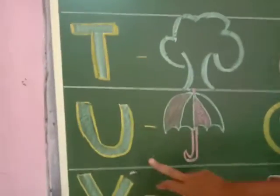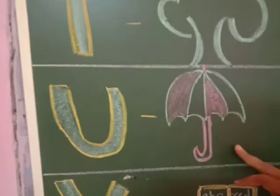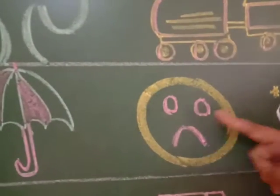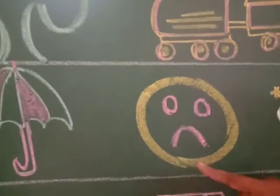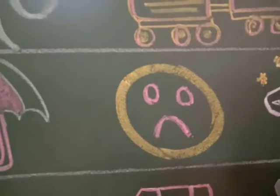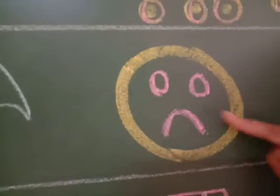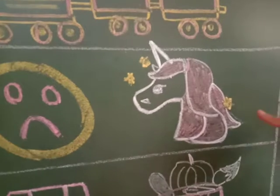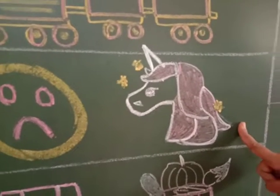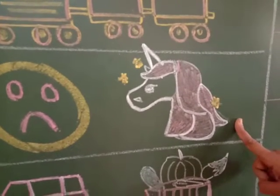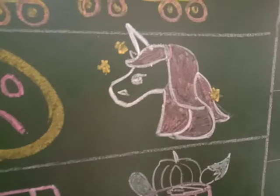Then U. U for umbrella, U for unhappy — see this face. Is it a smiley face? No! Unhappy, sad. Okay, so U for unhappy. And U for unicorn — yes, I know you all like this unicorn!